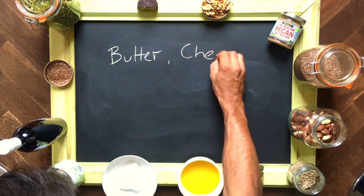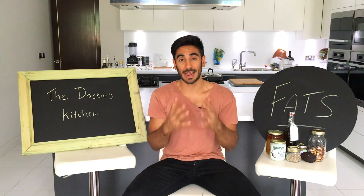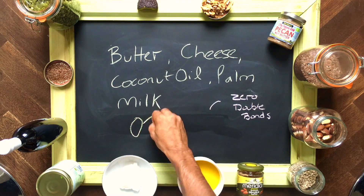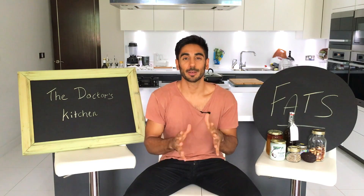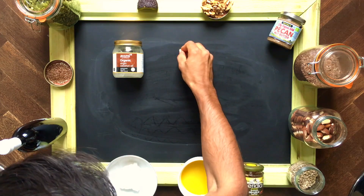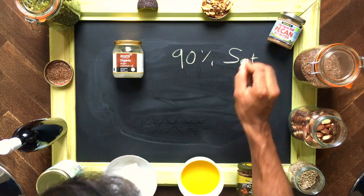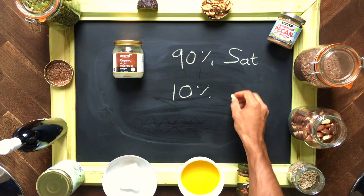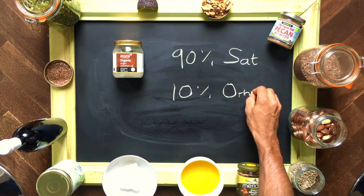Saturated fats — butter, cheese, coconut oil — are usually found in animal products. The fatty acid chains have zero double bonds, and that affects the chemical structure and how it interacts with our body. When something is referred to as a saturated fat, it's called that because it's largely made up of saturated fatty acids. For example, coconut oil is referred to as a saturated fat because the triglycerides that make it up are largely composed of saturated fatty acids.